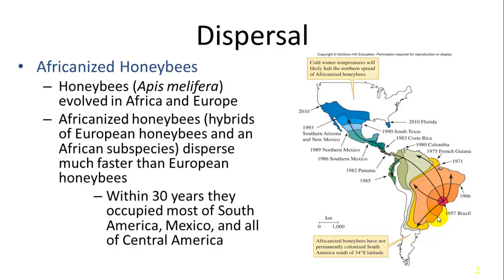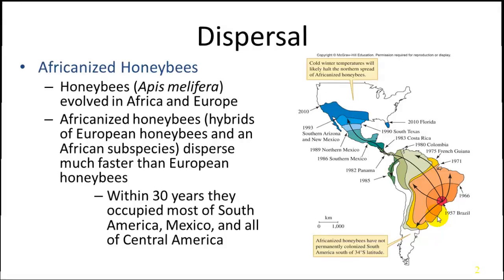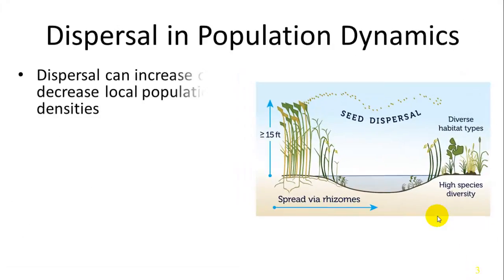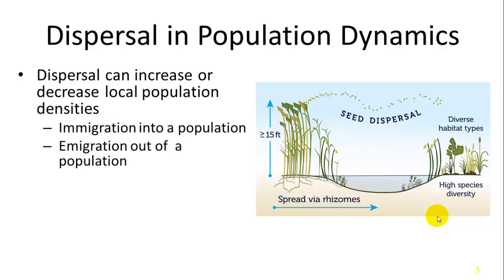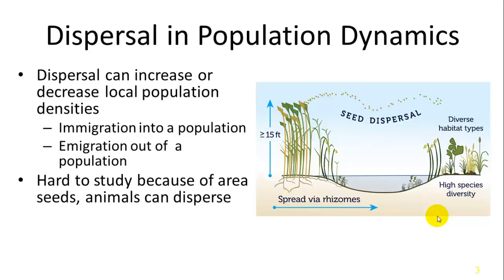Once they were introduced in South America and Brazil, they just dispersed like crazy, going up and down Central and South America all the way into the Southern United States. The only thing really halting them is cold winter temperatures. Dispersal can increase or decrease local population densities depending on the amount of immigration into or emigration out of a population. Dispersal is not studied very often because of how hard it is to keep track of animals as they move.